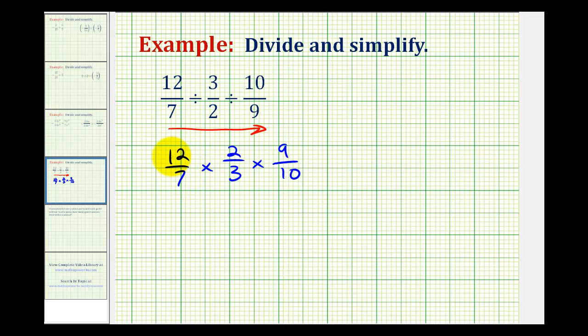So we're going to write all the numerators and denominators in prime factored form. The prime factorization of 12 is two times two times three. Seven is prime, two is prime, three is prime. The prime factorization of nine would be three times three, and the prime factorization of ten would be two times five.